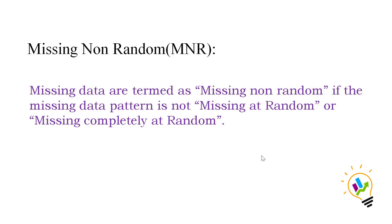The third pattern is Missing Non-Random. Missing data is termed Missing Non-Random if the missing data pattern is neither Missing at Random nor Missing Completely at Random. Data can be missing at random or missing completely at random, but it should not be missing non-random.